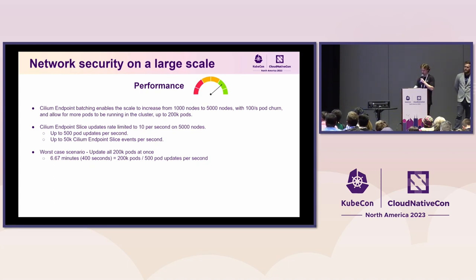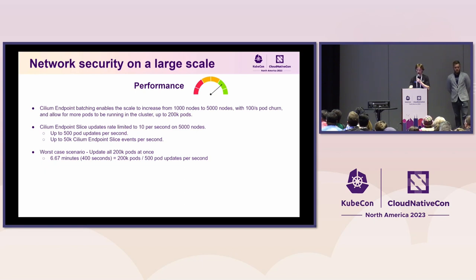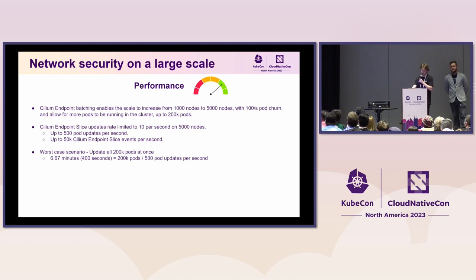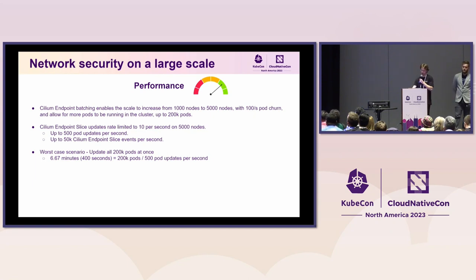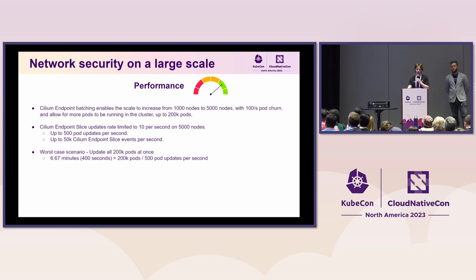In terms of performance, we've demonstrated that scale grows from 1,000 nodes to 5,000 nodes with the same pod churn rate. The number of pods increases as well — we support 200,000 pods, recommending about 40 pods per node at this large scale. Cilium endpoint slice updates are rate-limited to 10 per second to avoid overloading the API server. We went from sending up to 500,000 events to sending 50,000. We can also support up to 500 pod updates per second. In the worst case, if you suddenly update security identities for all pods, it would take up to 400 seconds — just under seven minutes.